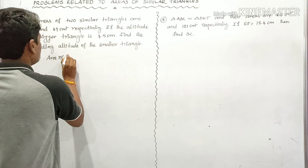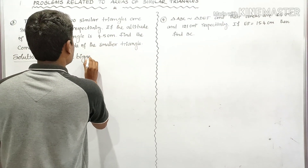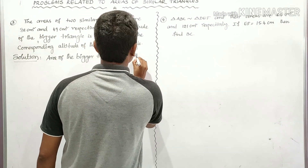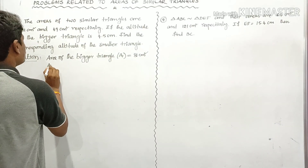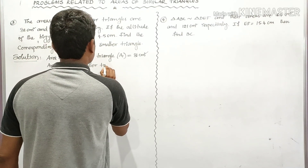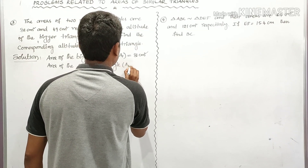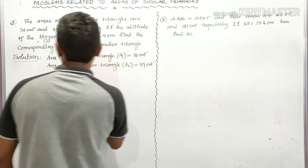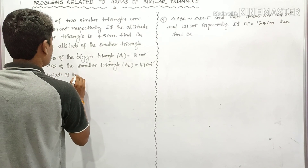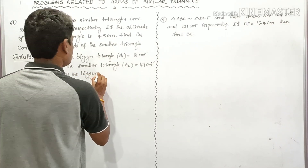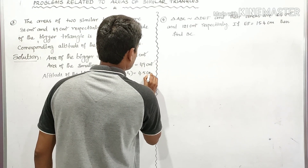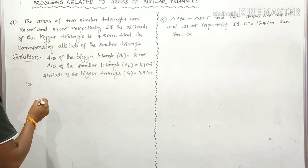For convenience, let the area of the bigger triangle be A1 = 81 cm², and the area of the smaller triangle be A2 = 49 cm². The altitude of the bigger triangle is given as X1 = 4.5 centimeters, and we have to find the altitude of the smaller triangle.